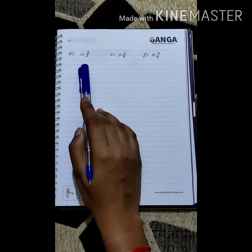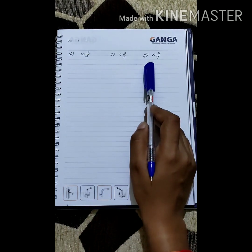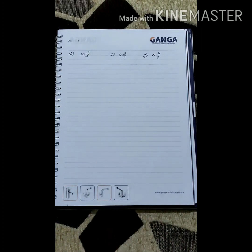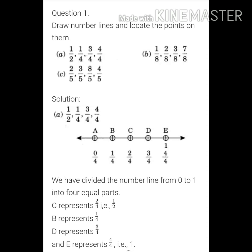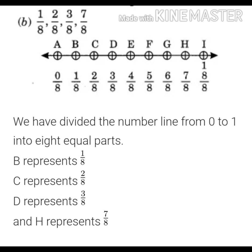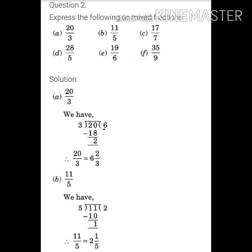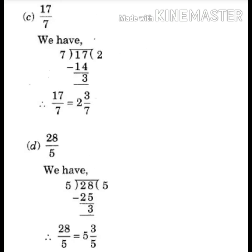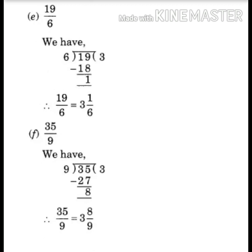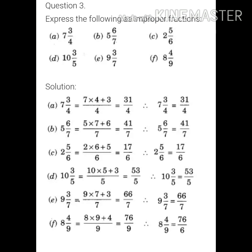Parts d: 10 whole 3 upon 5, e: 9 whole 3 upon 7, and f: 8 whole 4 upon 9 are quite similar to the previous parts, so I am giving those as homework. I hope you all have understood these topics well: how to represent fractions on a number line, how to convert mixed fractions into improper fractions, and how to convert improper fractions into mixed fractions. This chapter is now complete. Thank you.